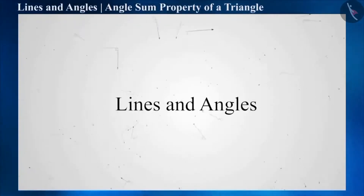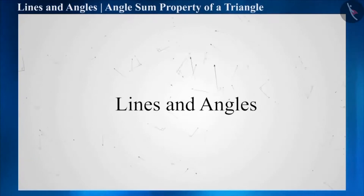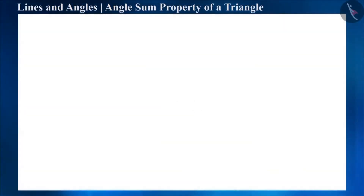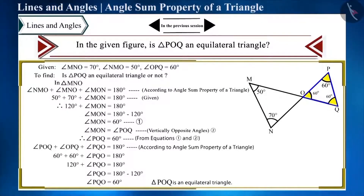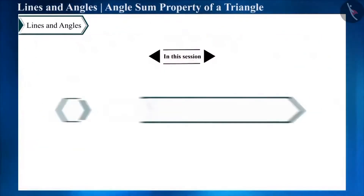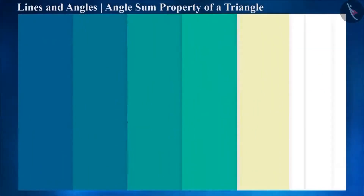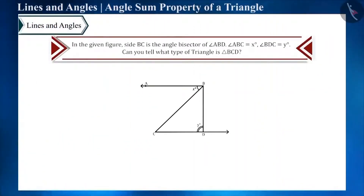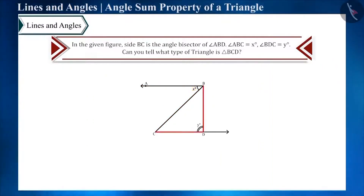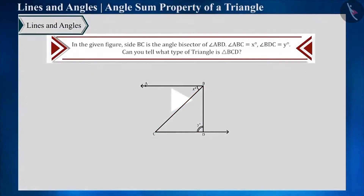Hello friends, welcome to this video on lines and angles. In the previous video we solved questions on angle sum property and exterior angle property of a triangle. Today we discuss some more facts. In the given figure, side BC bisects angle ABD. Angle ABC equals X degrees and angle BDC equals Y degrees. What kind of triangle is BCD?